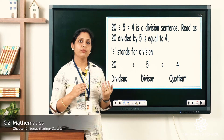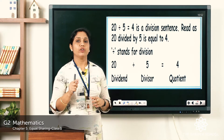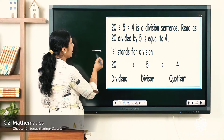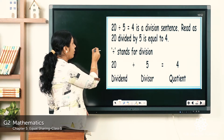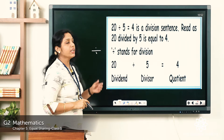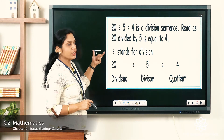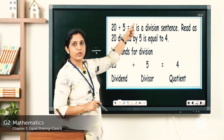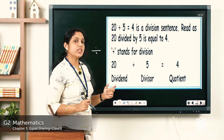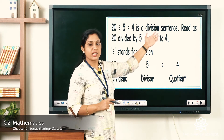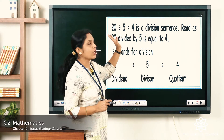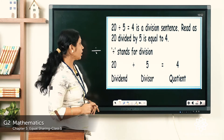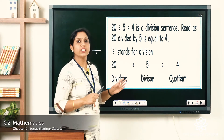For division there is a symbol. We learned symbols for addition, subtraction, and multiplication — division also has a symbol. Draw a horizontal line and put a dot above and below it. That is the division symbol. We can read this as: 20 divided by 5 is equal to 4. This is a division sentence. In this, 20 is the dividend.